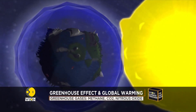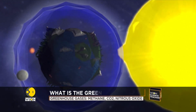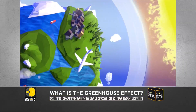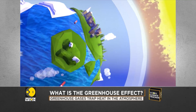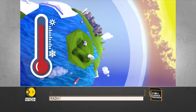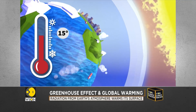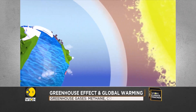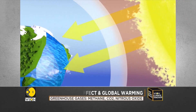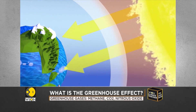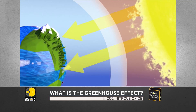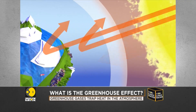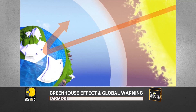The greenhouse effect is a natural phenomenon essential to life on Earth. A little like the glass in a glass house, it maintains the average temperature of the planet at 15 degrees Celsius instead of minus 18 degrees Celsius. Solar radiation passes through the atmosphere. Part of it is reflected back into space by the air, clouds and white surfaces, such as Arctic ice.